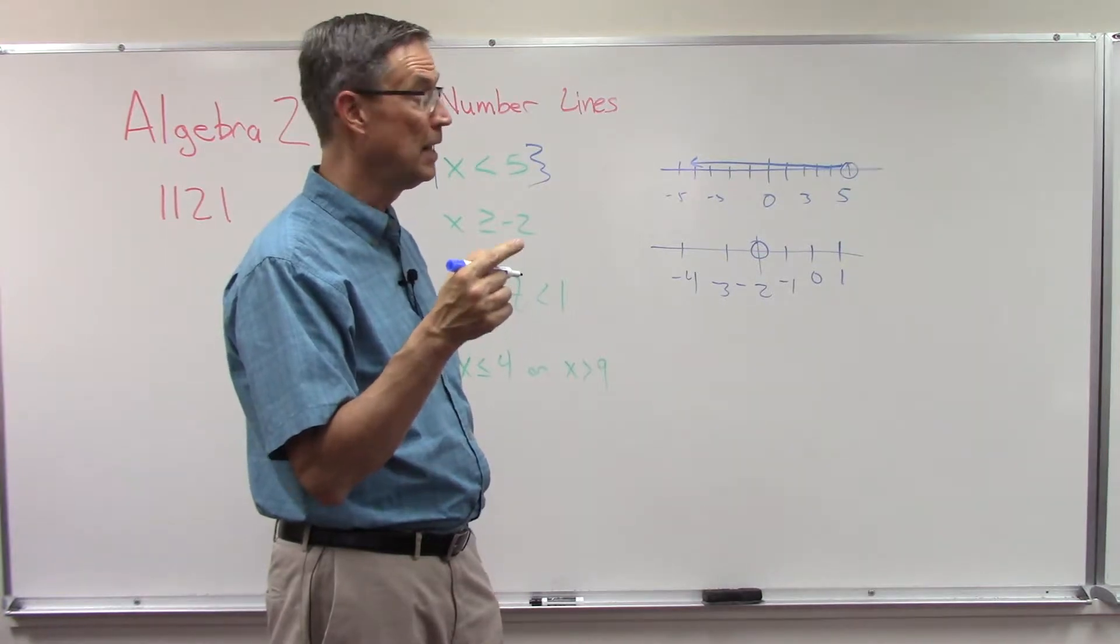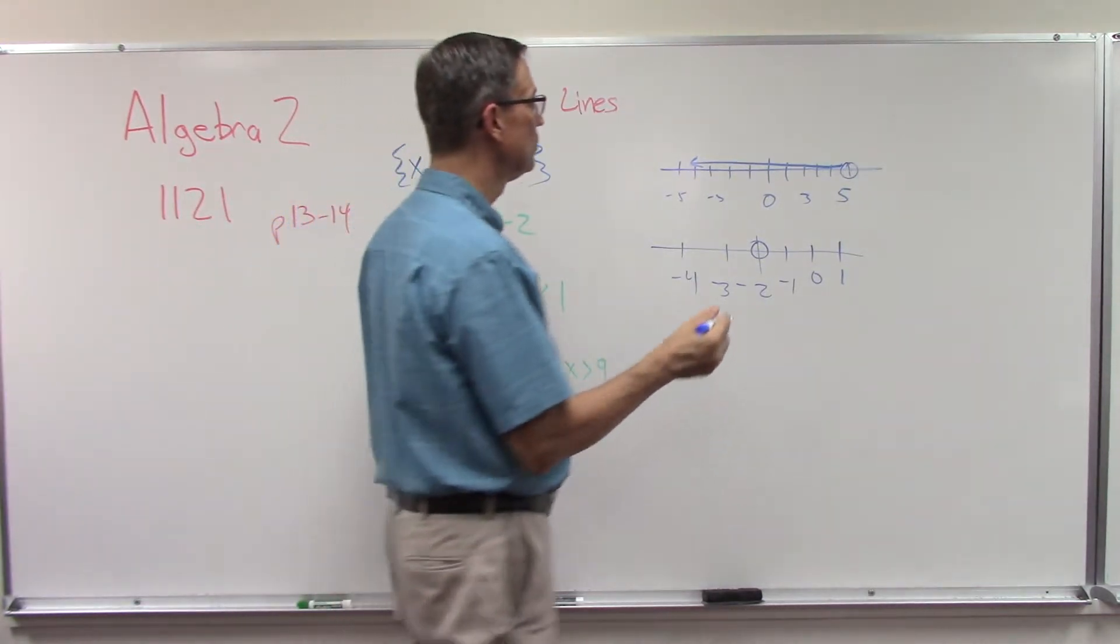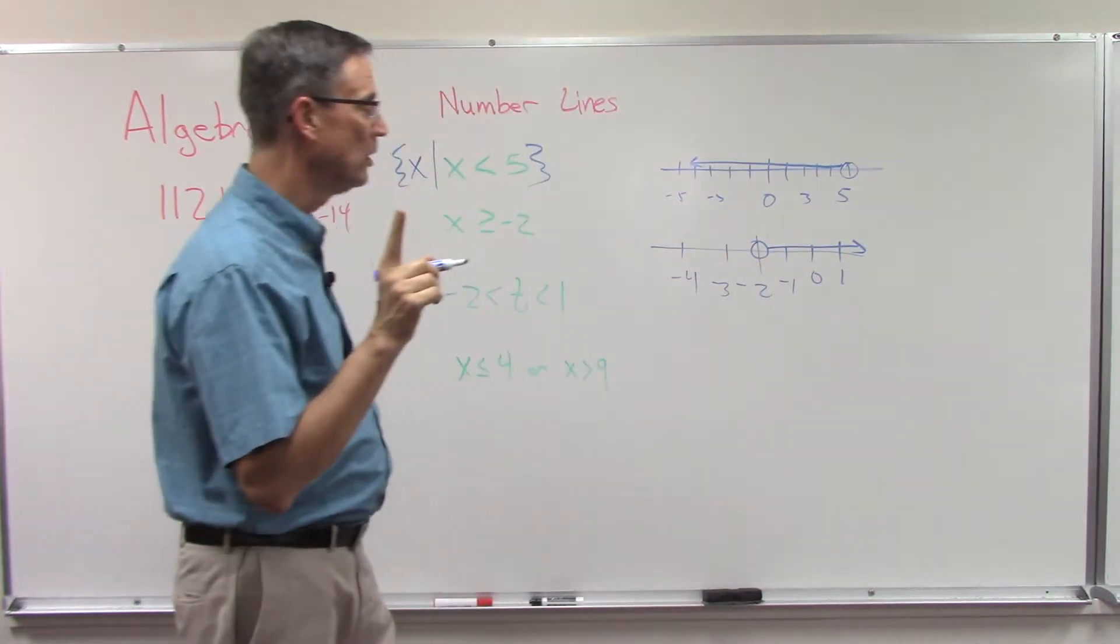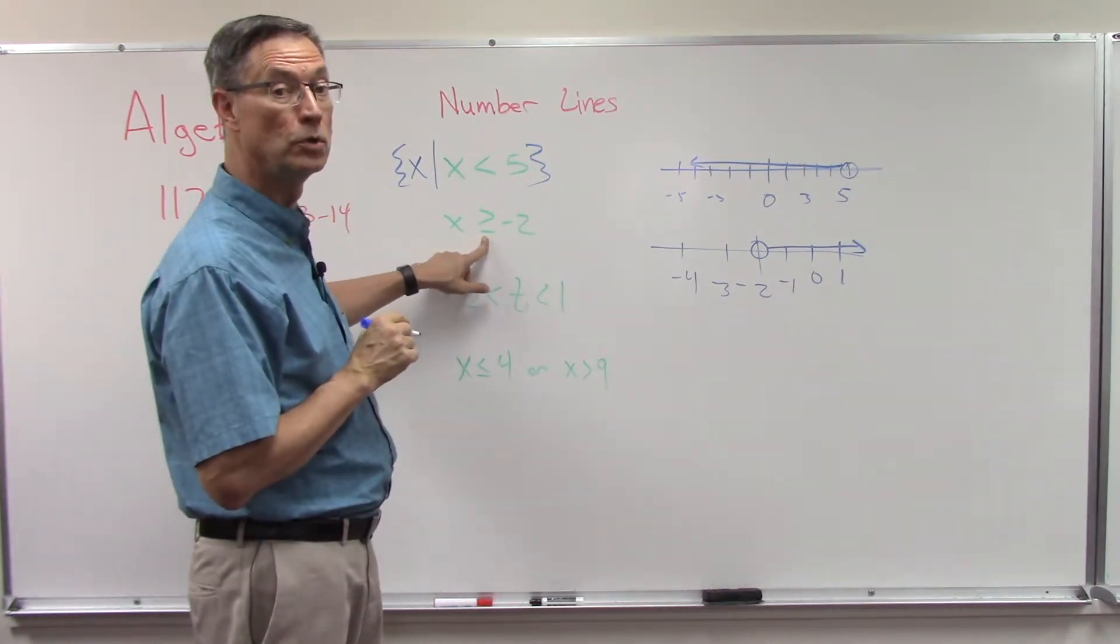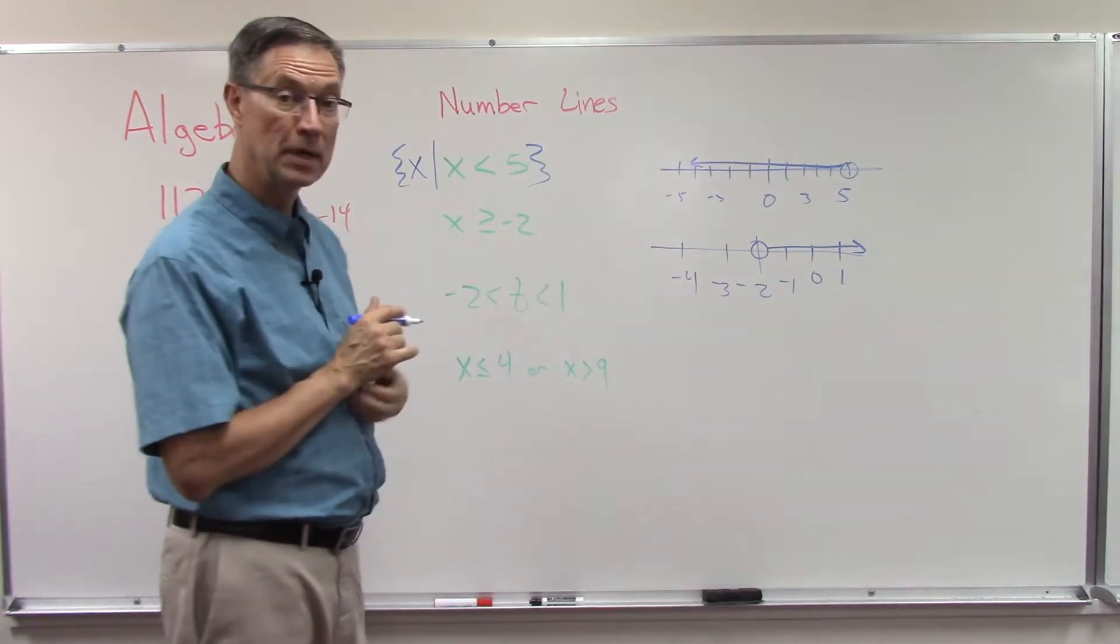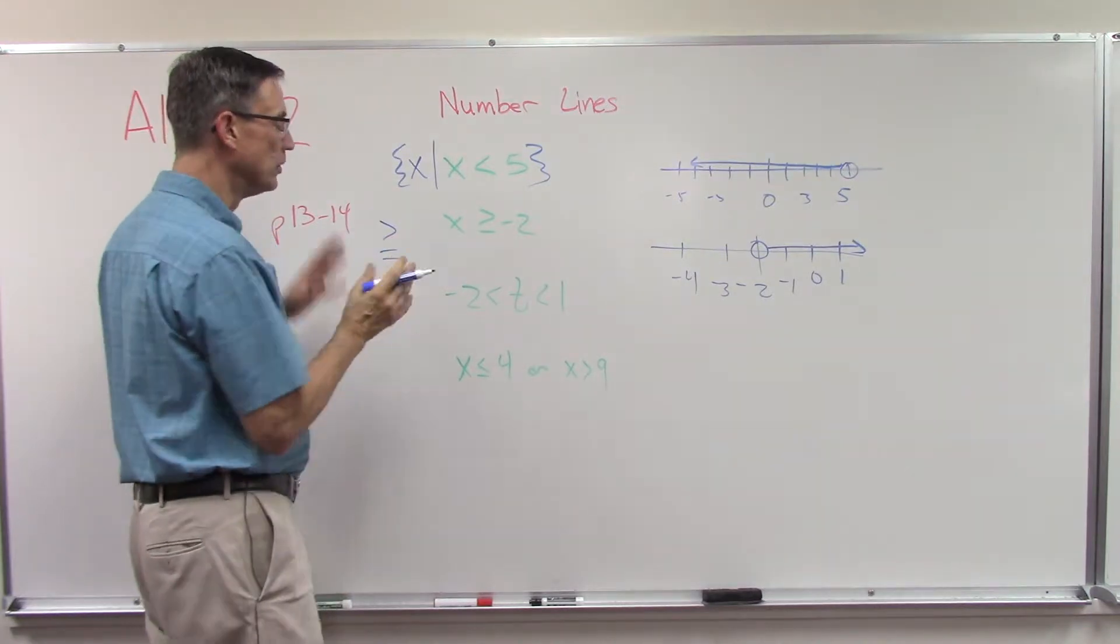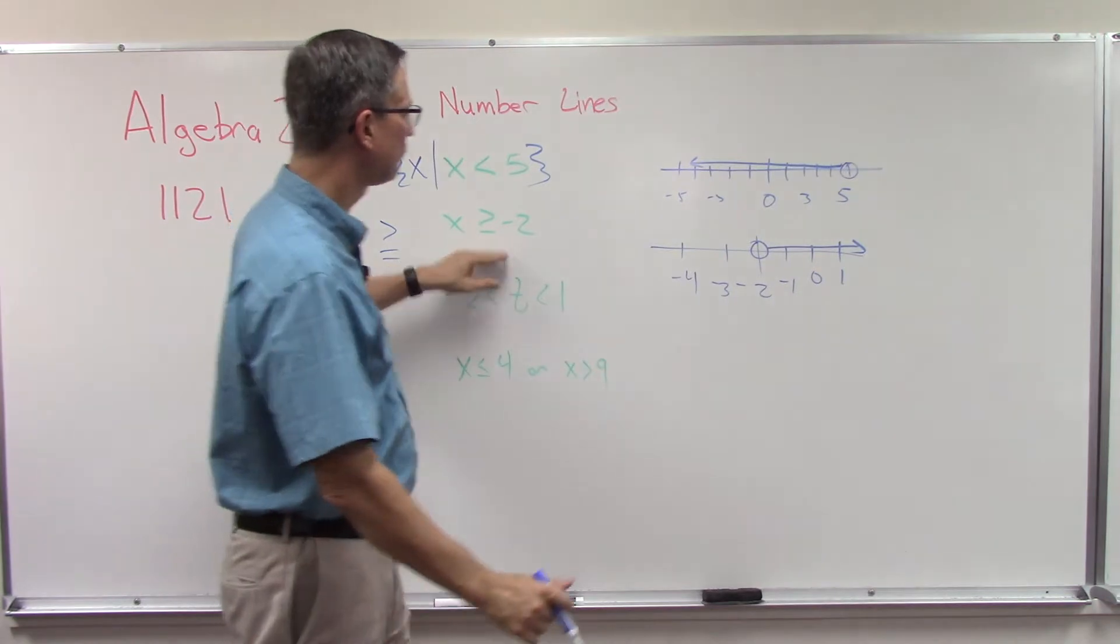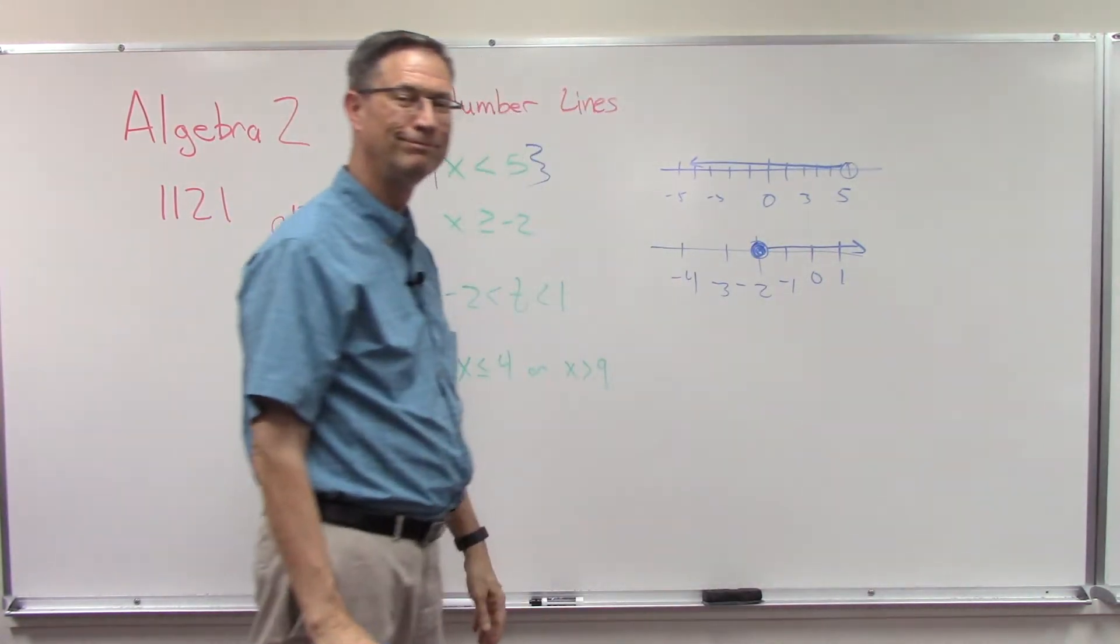So everything to the right is greater. But there's something else - we're not done with this one. This one also says 'or equal to.' So in that case, negative 2 is equal to negative 2. This symbol here is kind of like taking a greater than symbol and an equal symbol and merging them together. So that means I need to fill in the circle.